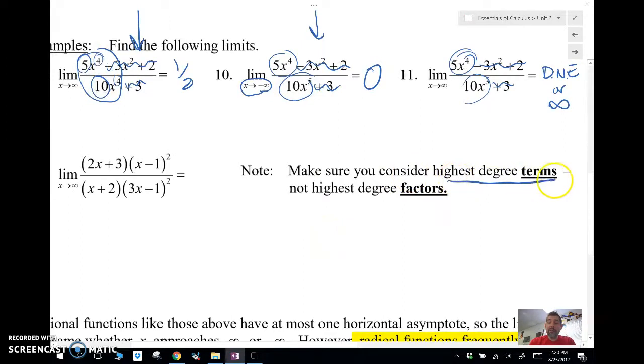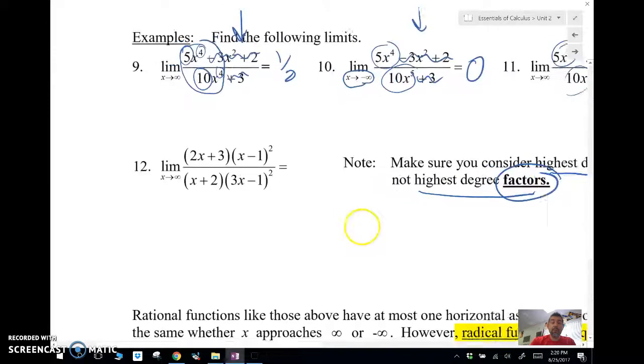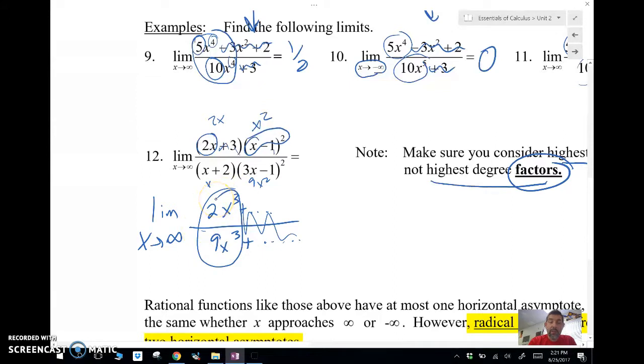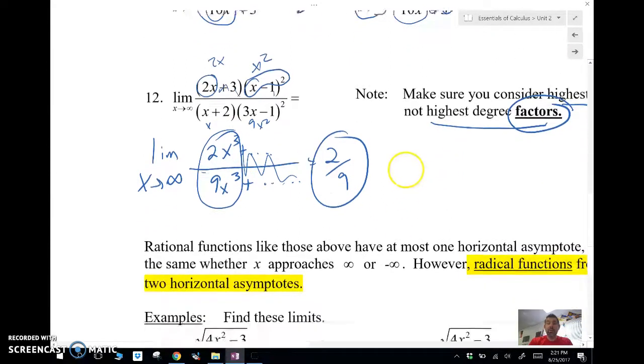Make sure you consider the highest degree terms, not the highest degree factors. So let me show you what I mean by that. Notice here that these are all factored, right? So if I just take this part, this is the first part that's going to give me an x squared. This first part is going to give me a 2x. I don't care about all this other stuff here because those terms aren't really going to make a difference. So really, all I'm looking at is 2x cubed plus dot, dot, dot. There are other things there in that polynomial. This one is going to give me a 9x squared and an x. And that's going to give me 9x cubed plus dot, dot, dot. And I'm looking at the limit as x approaches infinity of this. I don't really need all these guys. I only need the highest degree of the polynomial. So since they're the same, my answer is going to be 2/9. That's all there is to limits at infinity. Pretty nice, right?